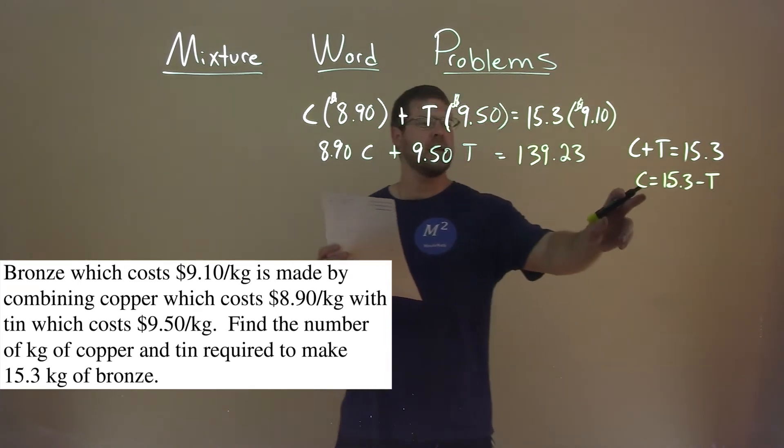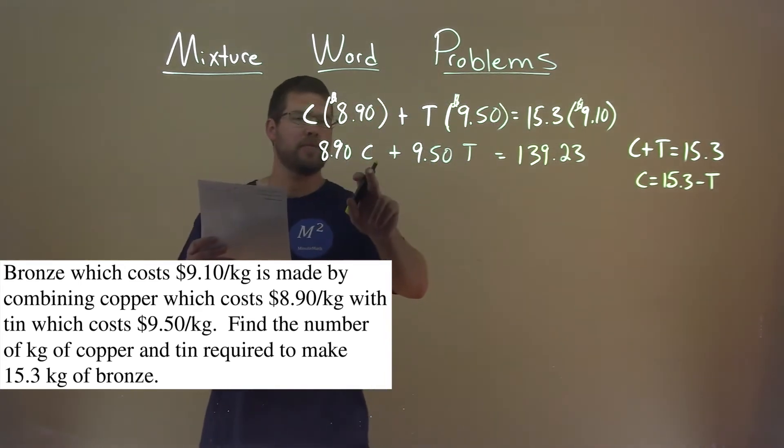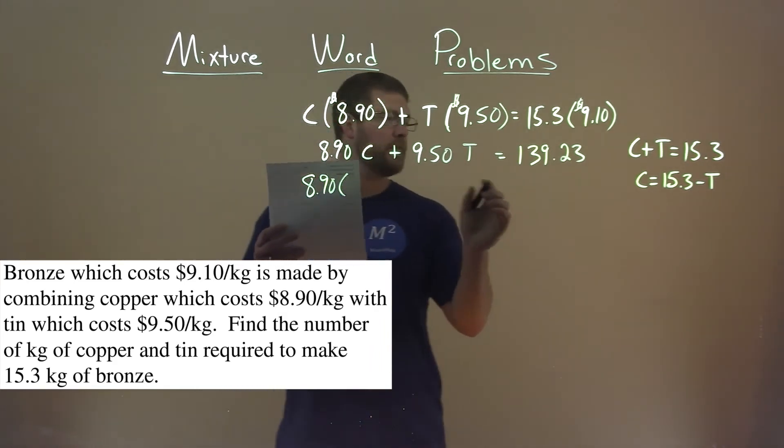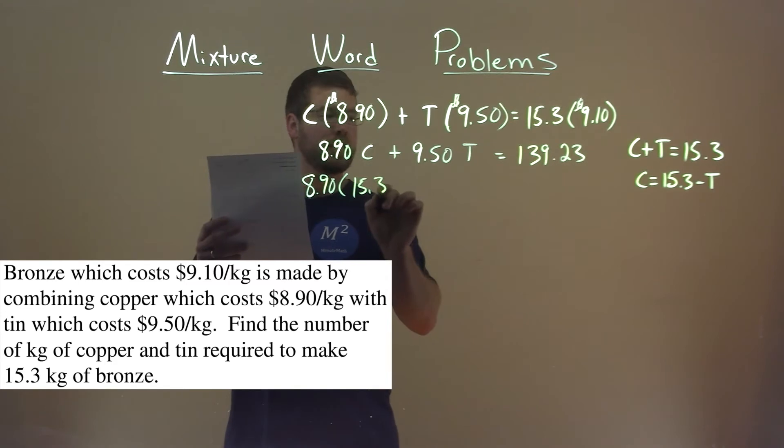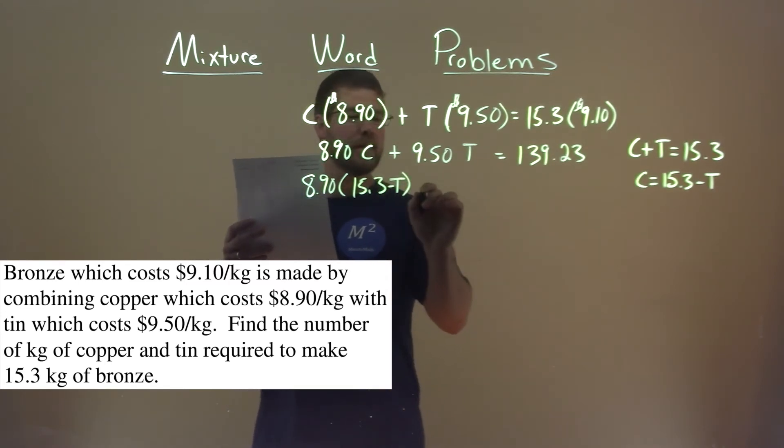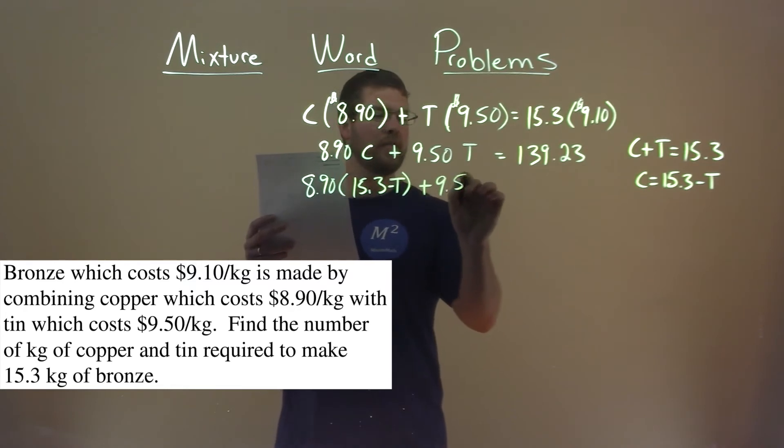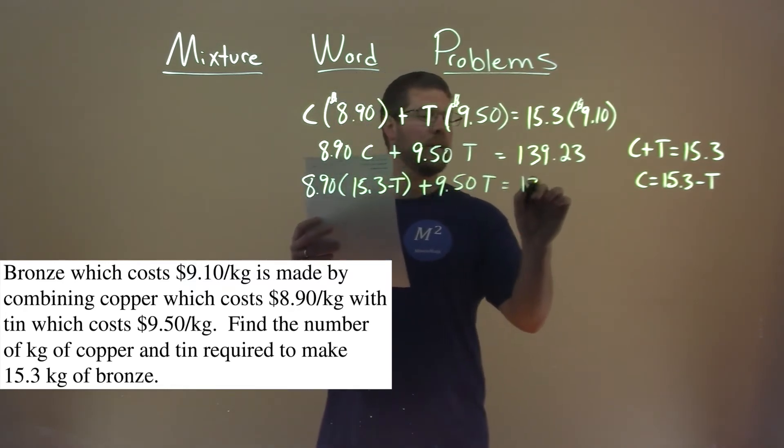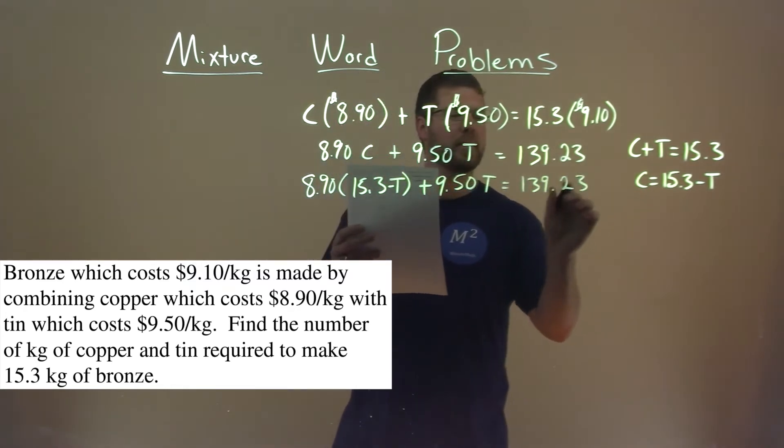Okay, so now I'm going to take that information, and I'm going to substitute that in for this C here. 8.90 times, in parentheses, 15.3 minus T, plus 9.50 T equals that 139.23.